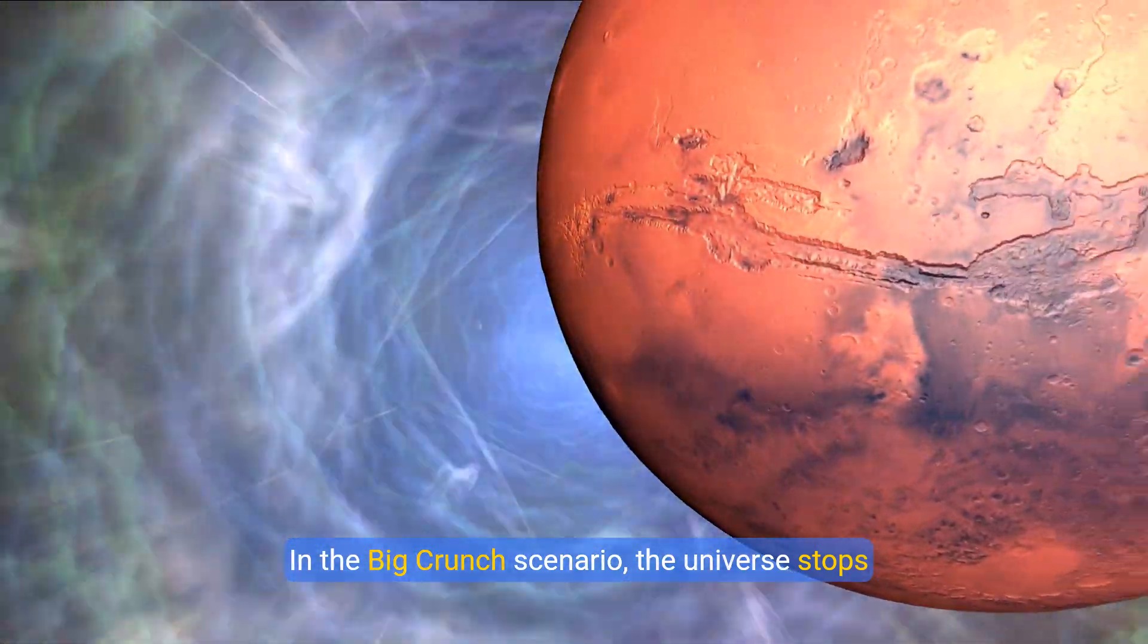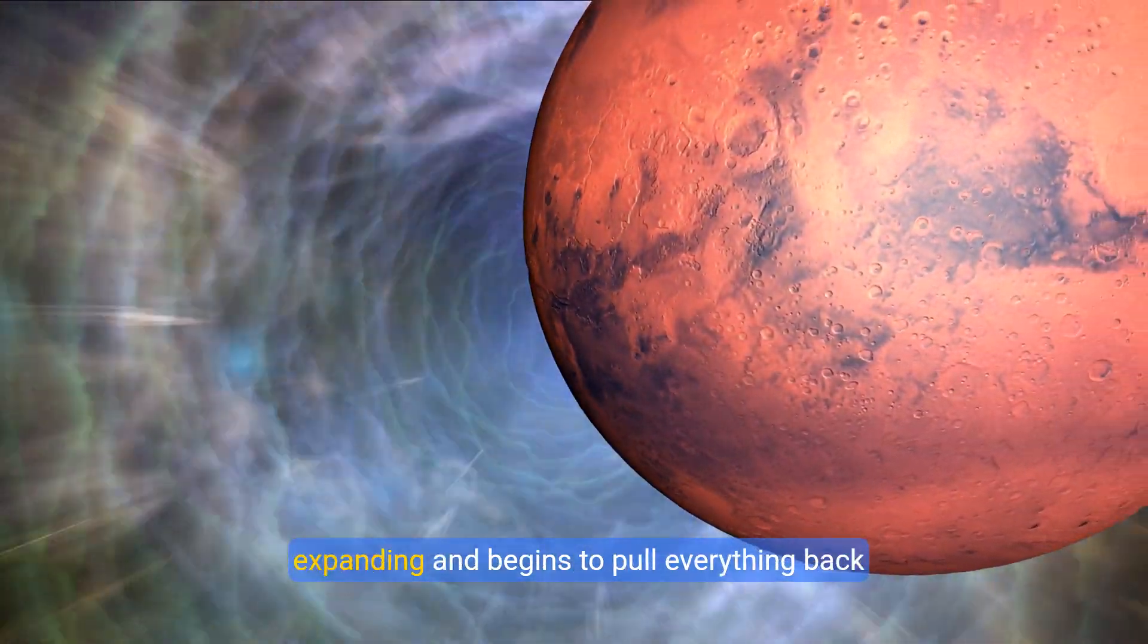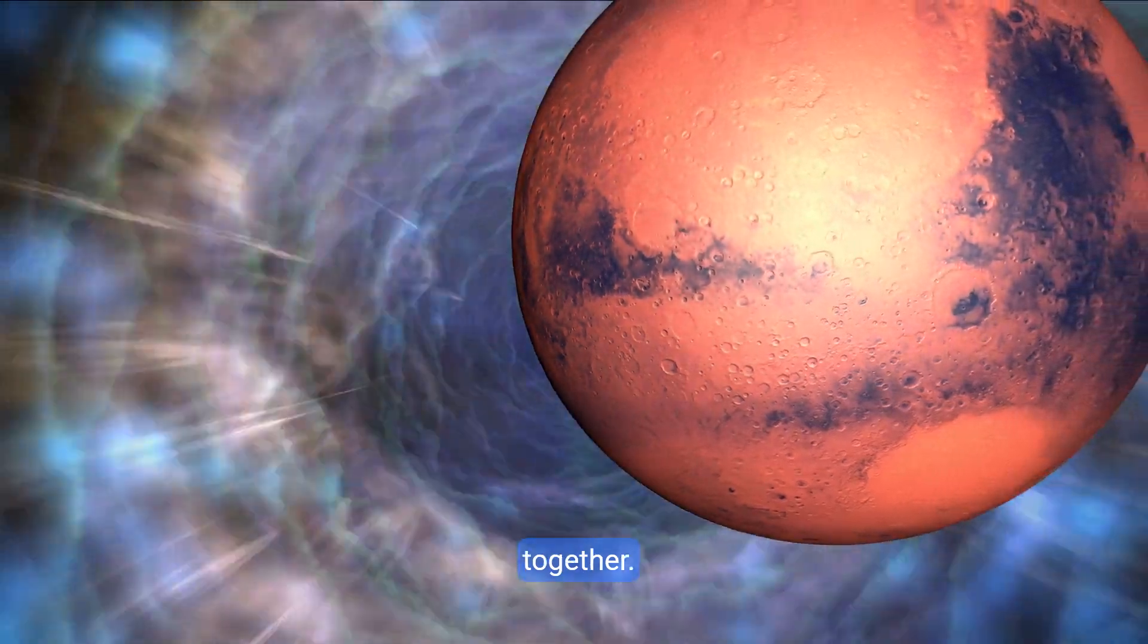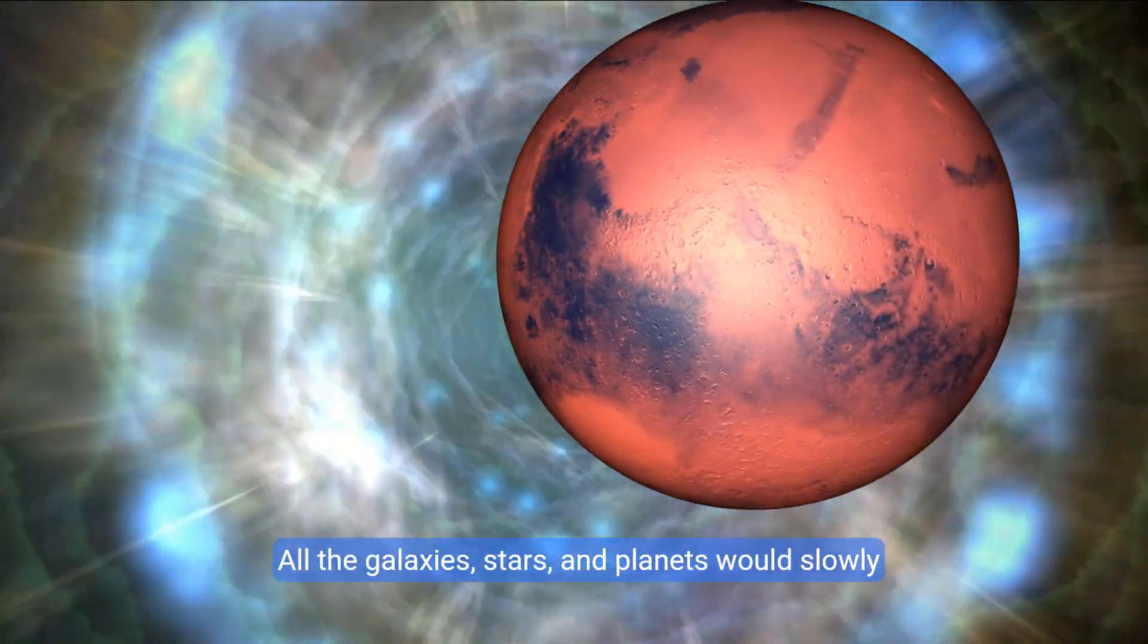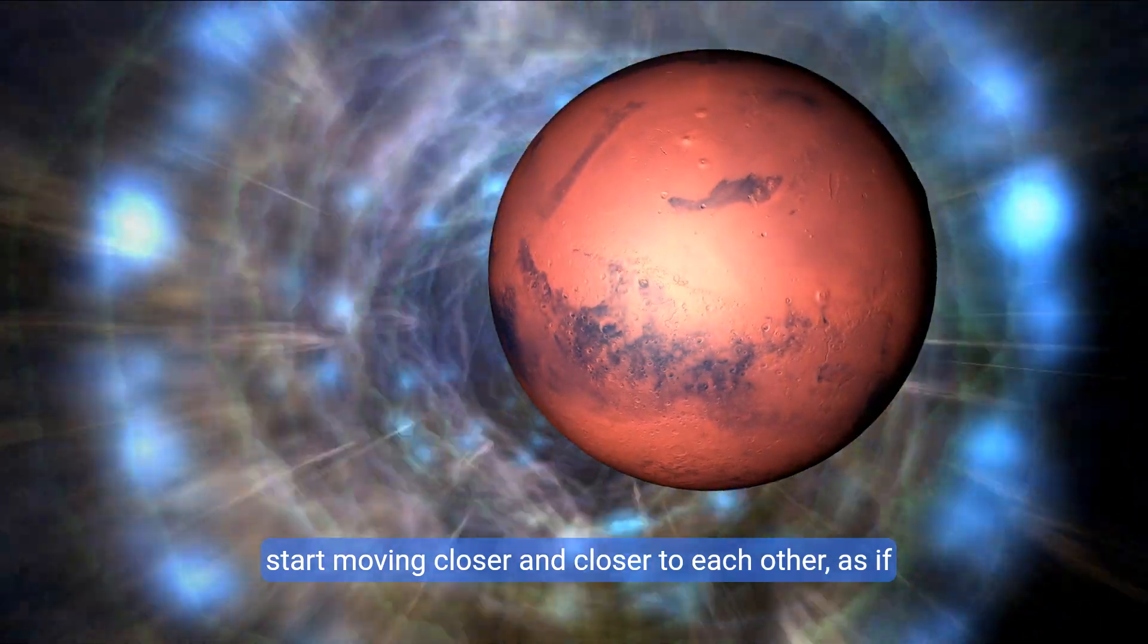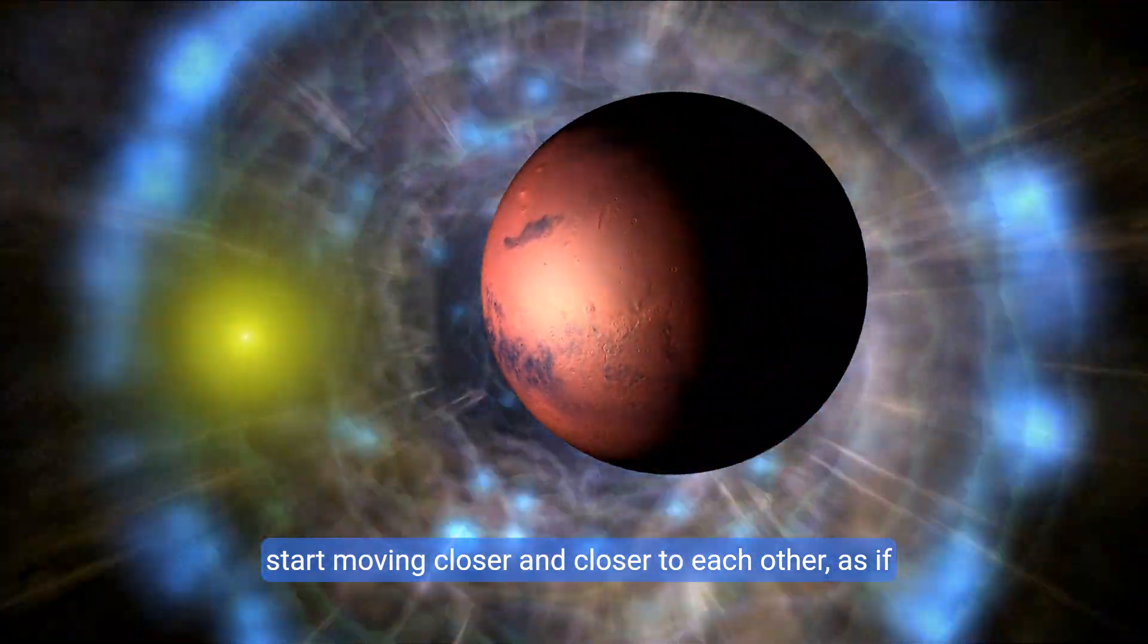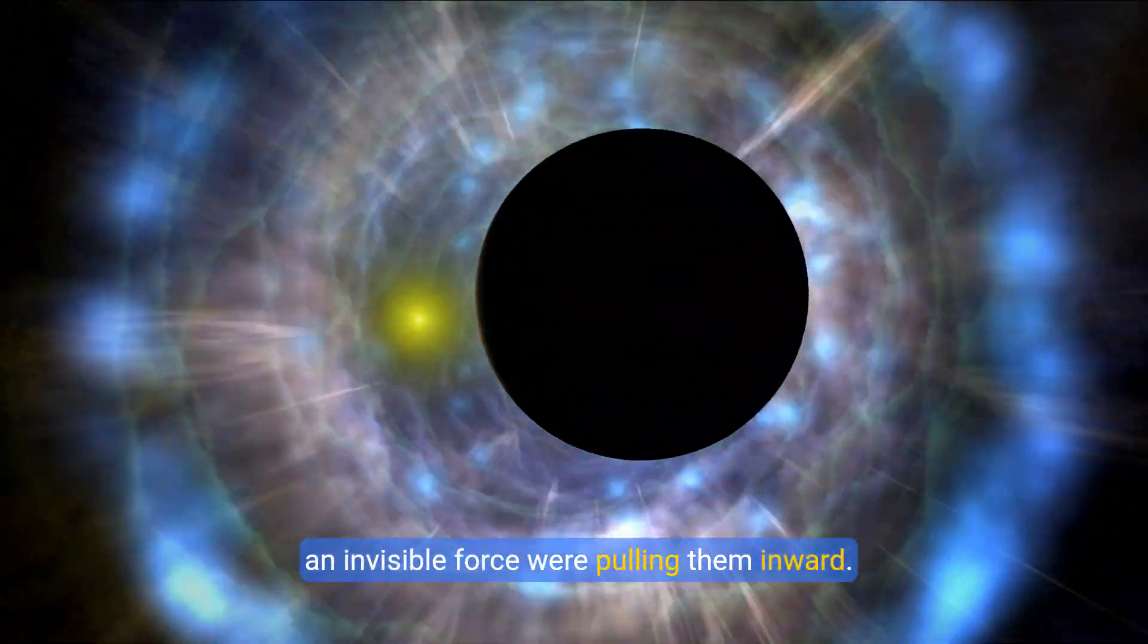In the Big Crunch Scenario, the universe stops expanding and begins to pull everything back together. All the galaxies, stars and planets would slowly start moving closer and closer to each other, as if an invisible force were pulling them inward.